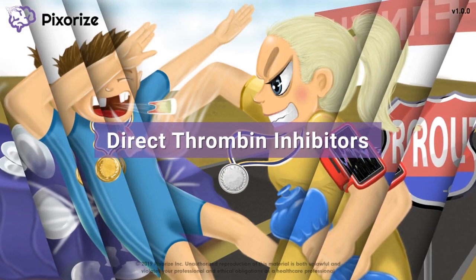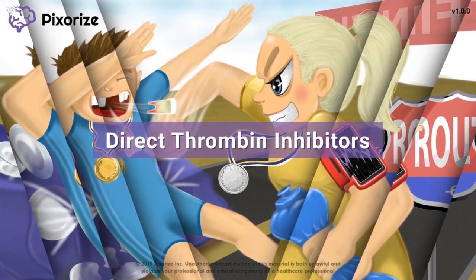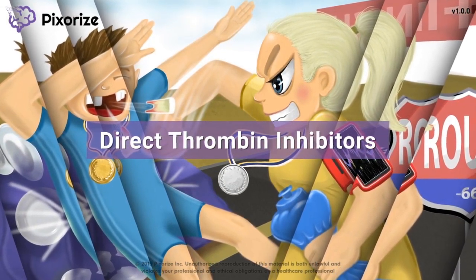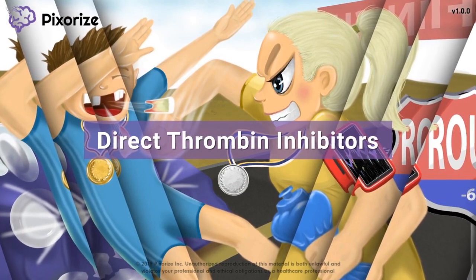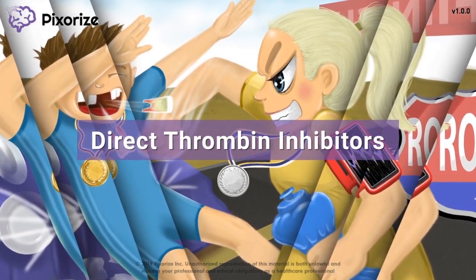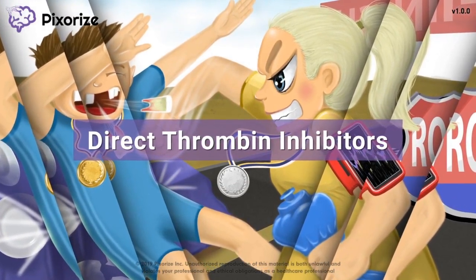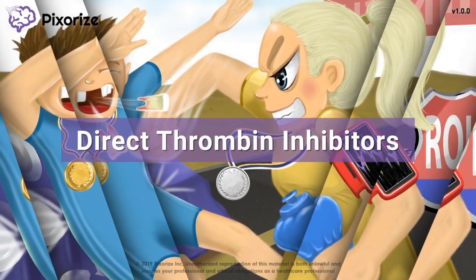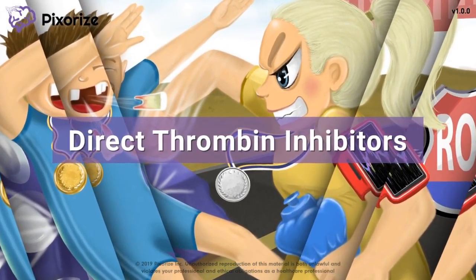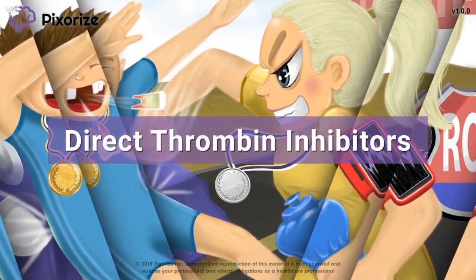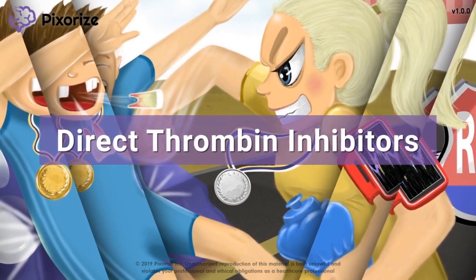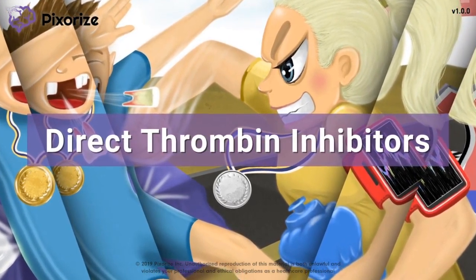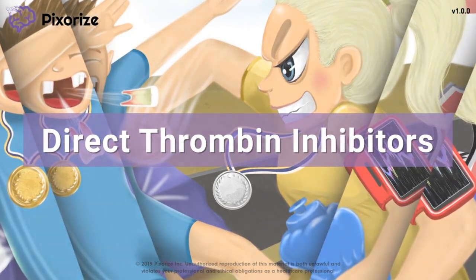Direct thrombin inhibitors, or DTIs, prevent blood clot formation. These drugs are often used in patients with a history of DVT, atrial fibrillation, and in patients with heparin-induced thrombocytopenia. In this mnemonic video, we'll cover the mechanism of DTIs, the drugs you need to know, and the common clinical uses.